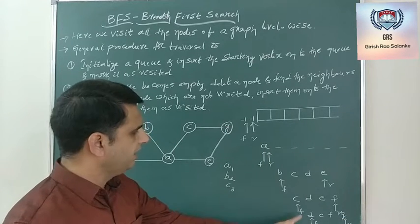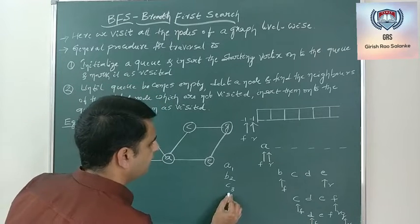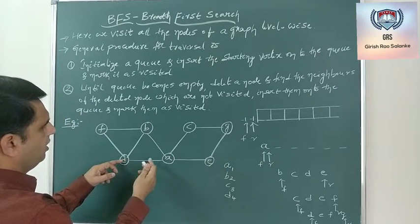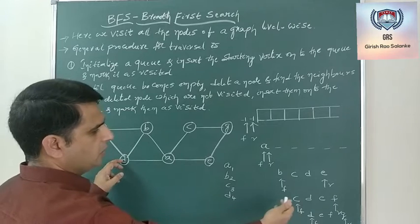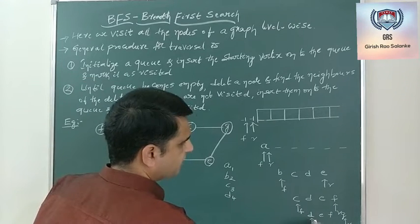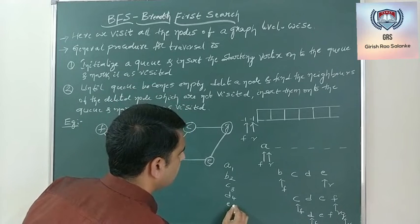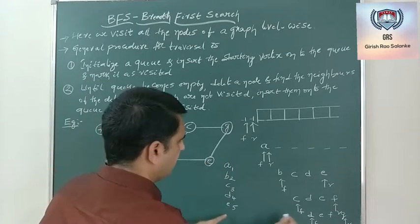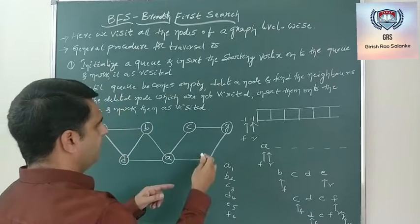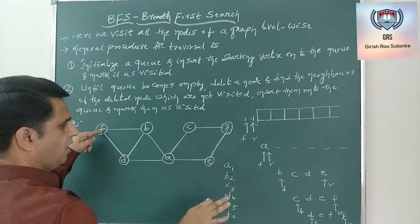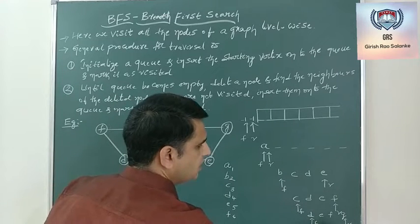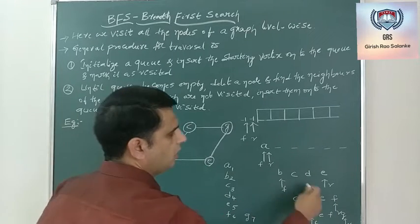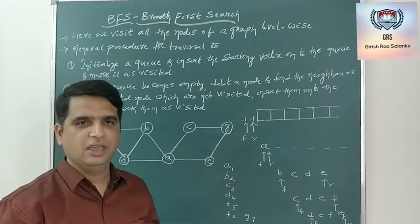Delete D — it is D4. Neighbors of D are A, B, and F, all of which are already on the queue, so no new nodes are added. Next, E gets deleted — it is E5. The neighbor of E is G, which is already in the queue. Next, F gets deleted — neighbor of F is B and D, which are already visited. Finally, G is the last node — G7. G gets deleted and all nodes in the queue are processed.